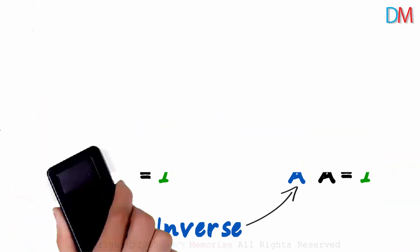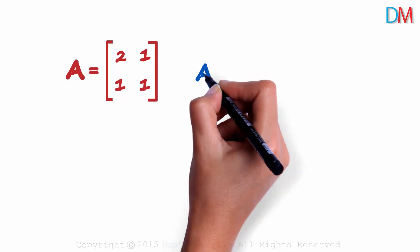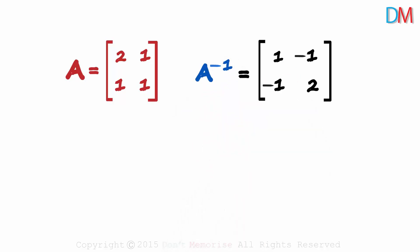Let's look at an example on a new page. We are given matrix A. It's a 2 by 2 matrix. And for this matrix A, we are given A inverse. It equals this. Now we need to check if their product gives us the identity matrix.